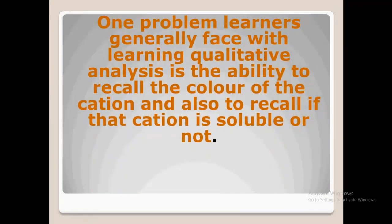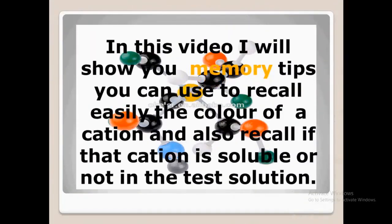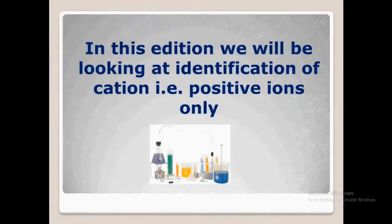One problem learners generally face with qualitative analysis is the ability to recall the color of the cation and also to recall if that cation is soluble or not. In this video, I will show you memory tips you can use to recall easily the color of a cation and if it is soluble in a test solution. We will be looking at identification of cations only, that is positive ions.